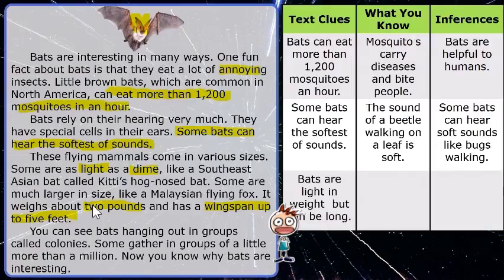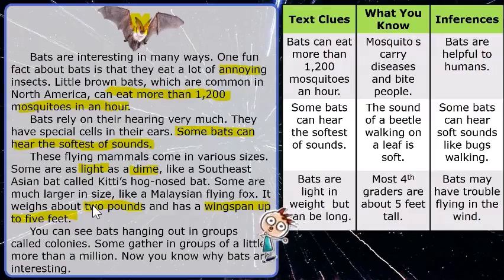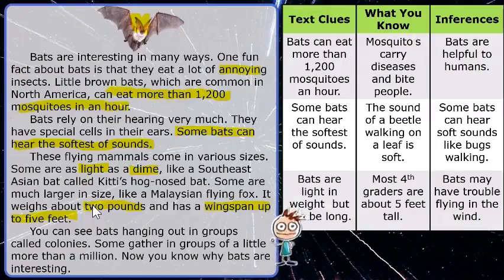So because bats can be so large but weigh so little, what can we infer? Bats probably don't like flying in the wind — bats definitely have trouble flying in the wind if they are that big and that light. That's how you make an inference: you take a clue from the text, put it with something you already know, and make a new conclusion. That's how you make inferences. Later!